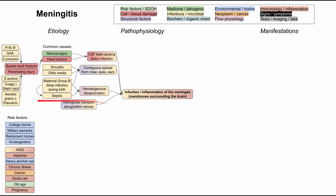Another way to break down the etiologies is by risk factors. College dorms, military barracks, retirement homes, and kindergartens all have something in common — they are crowded occupational or living conditions, which predisposes you to meningitis. College dorms are specifically associated with Neisseria meningitidis. New 18 or 19 year olds starting college may come home with a rash, headache, and neck stiffness — likely a fast-growing, severe case of Neisseria meningitis.